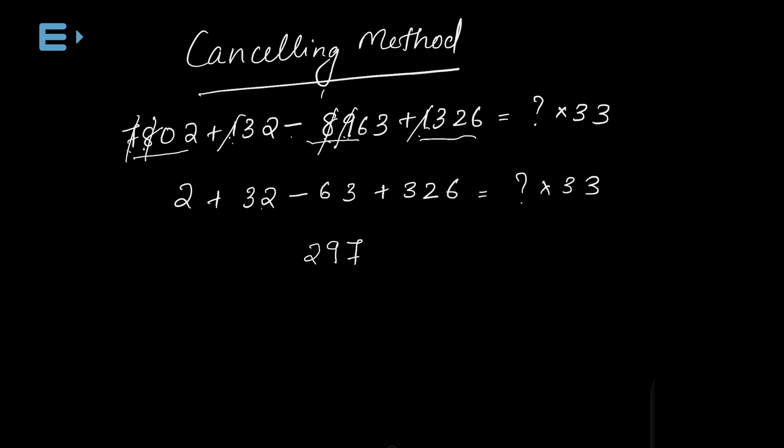The first digit gives us 297 divided by 33, so we get the value of the question mark. 297 divided by 33 equals 9. The answer is 9. This is the cancellation method — by cancelling numbers and digits, we save time. There are questions available in the app, so if we practice this, we will be able to work it out.